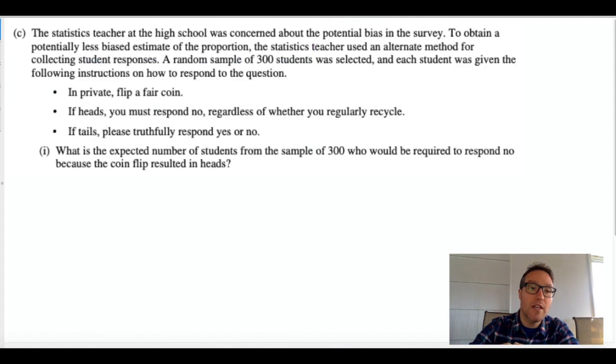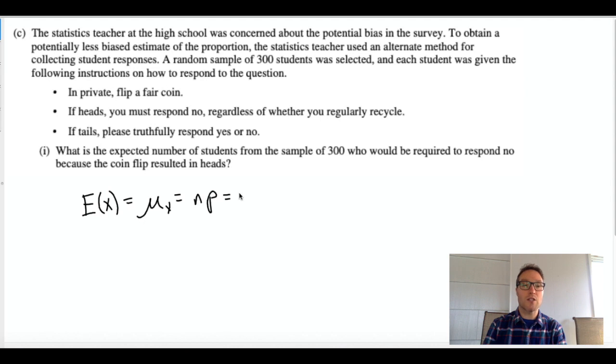All right, let's take a look at part C. So part C is coming up with a potentially less biased estimate, so it involves flipping a fair coin. So they're going to flip, every student's going to flip a coin, and if it's heads they're forced to respond no regardless of their answer. If it's tails they give the truth. Okay, so they won't feel as bad directly interacting with the environmental science teacher.